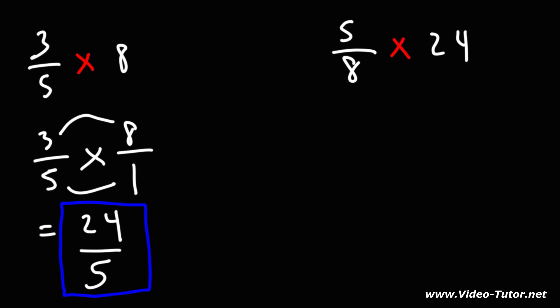Now what about the last example? So we can write this as 24 over 1. Now if we were to multiply across, we're going to get a large number. Something else that we can do is we could divide before we multiply. We could divide 24 by 8. Or you can see it this way.